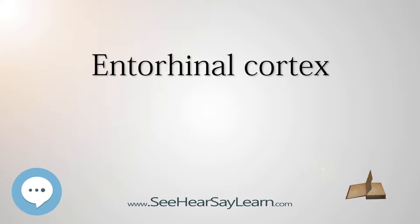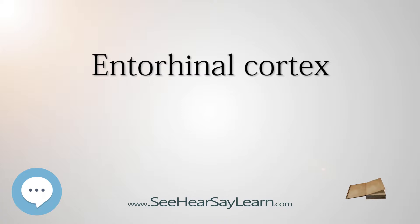In rodents, the EC is located at the caudal end of the temporal lobe. In primates, it is located at the rostral end of the temporal lobe and stretches dorsolaterally. It is usually divided into medial and lateral regions, with three bands with distinct properties and connectivity running perpendicular across the whole area. A distinguishing characteristic of the EC is the lack of cell bodies where layer 4 should be — this layer is called the lamina dissecans.